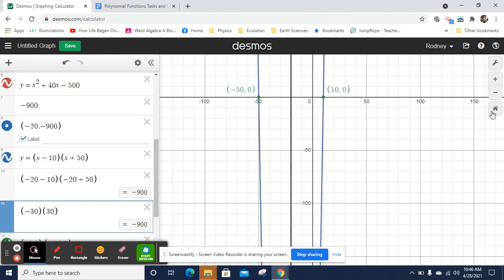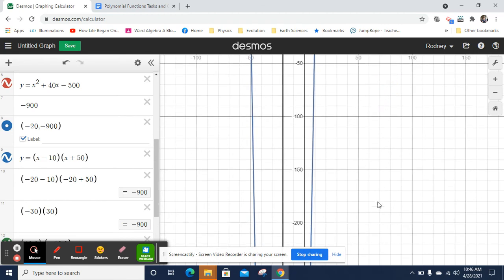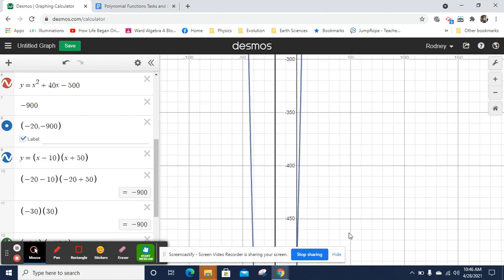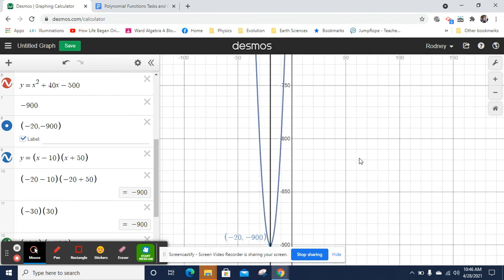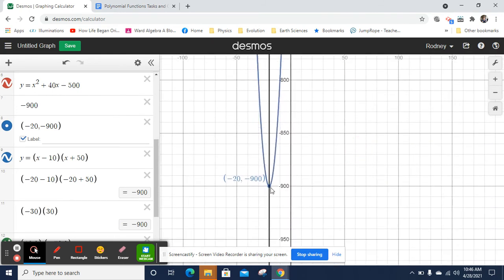Let's see if I got the vertex. We'll scroll way, way, way, way down and see if we got the vertex for this. And yes, I did. That is the vertex for this parabola.